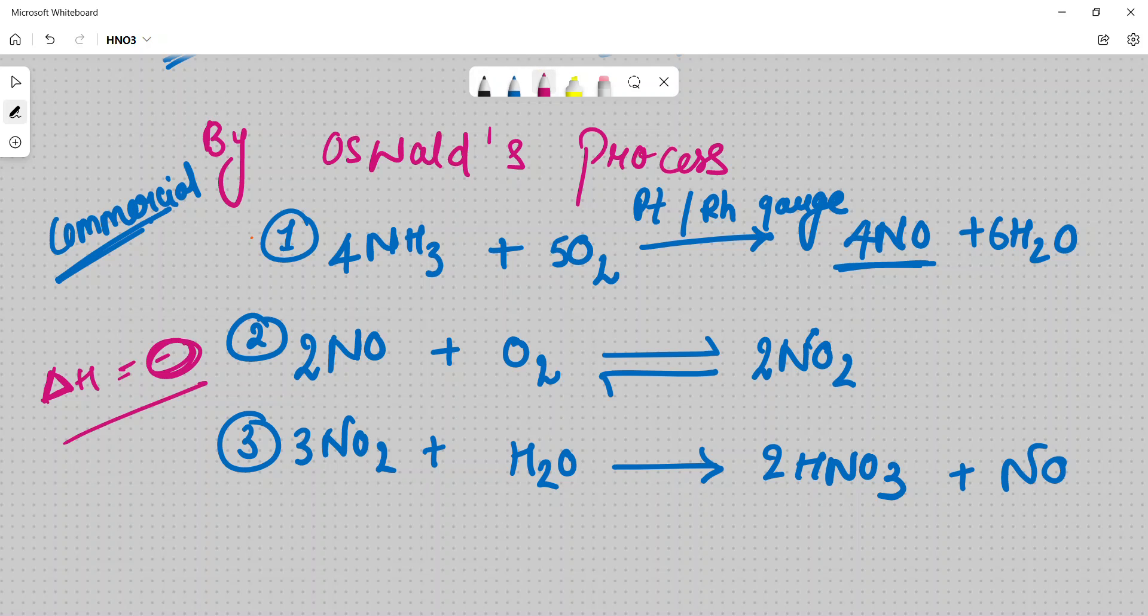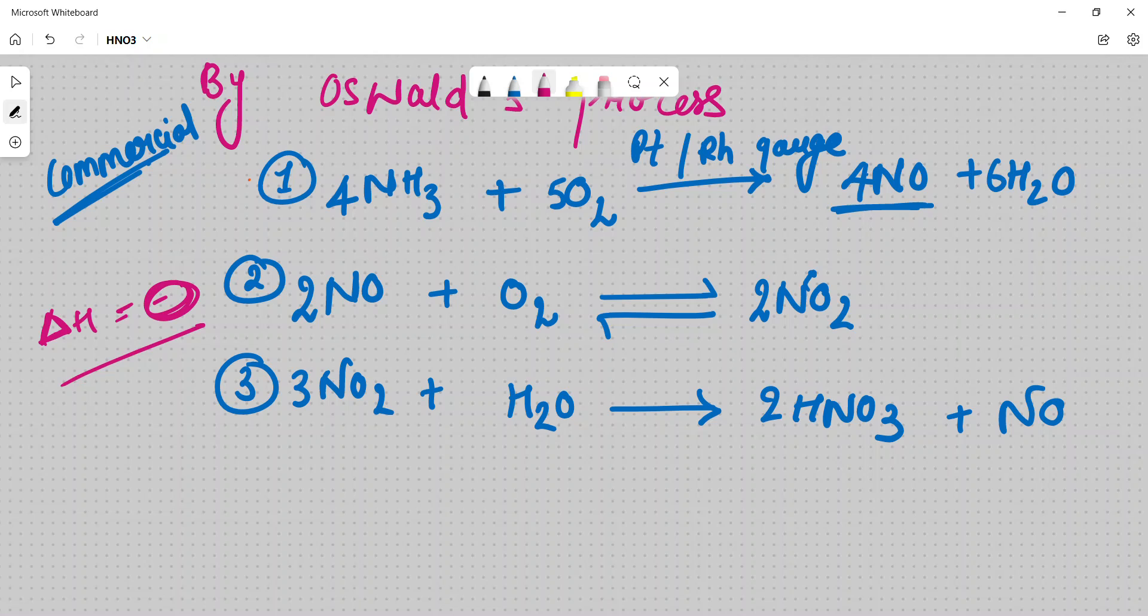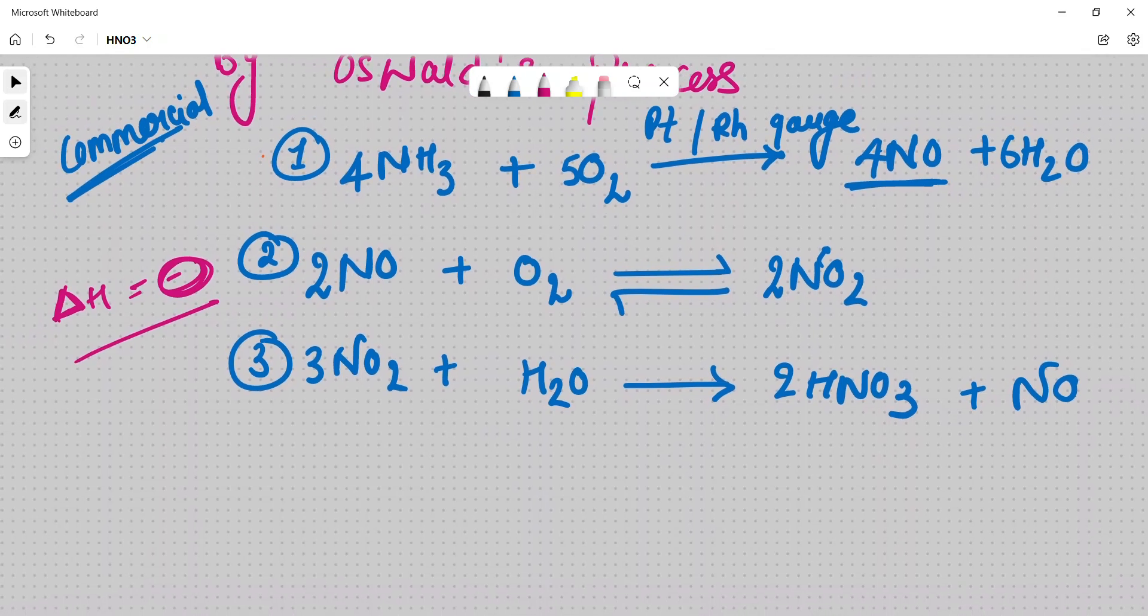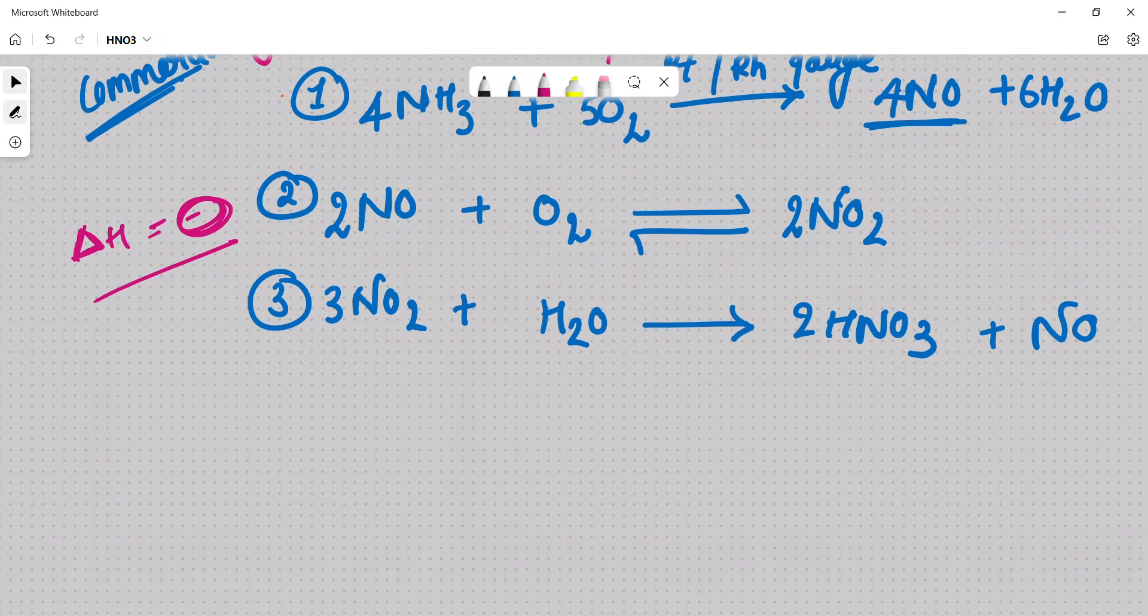There are some conditions if we want to increase the yield. It means that HNO3 will produce more amounts. We will follow some conditions.